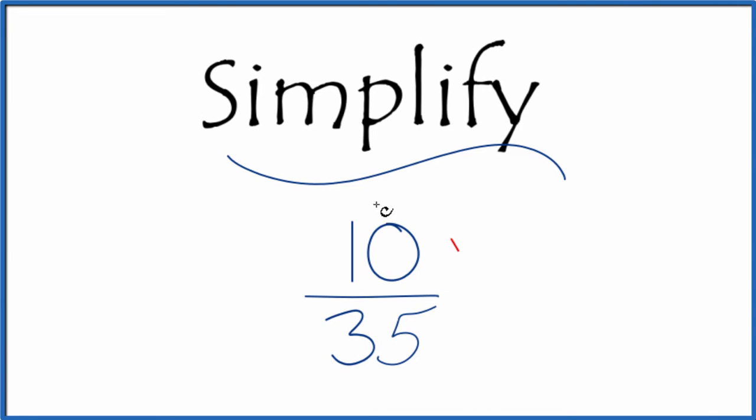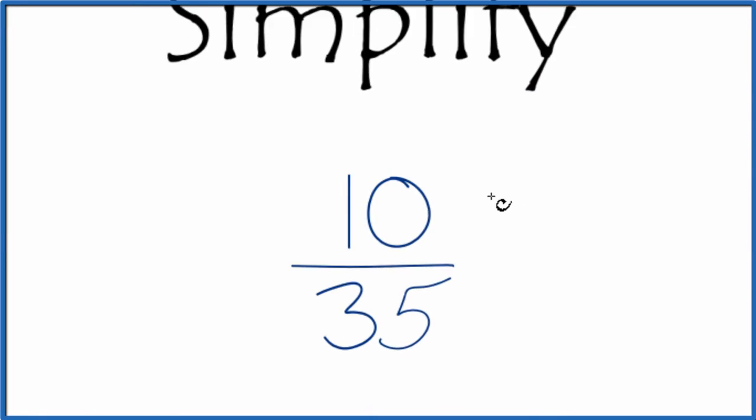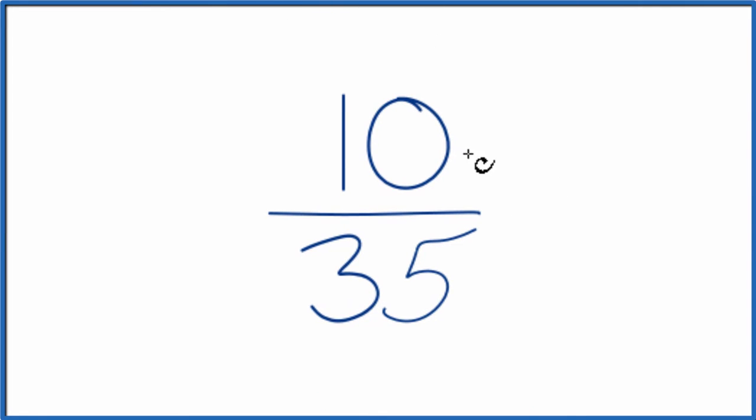Let's simplify the fraction 10 35ths. Here's what we do. We're trying to find another fraction that's equivalent, has the same value as 10 divided by 35, just that we reduced or simplified it down to lowest terms.